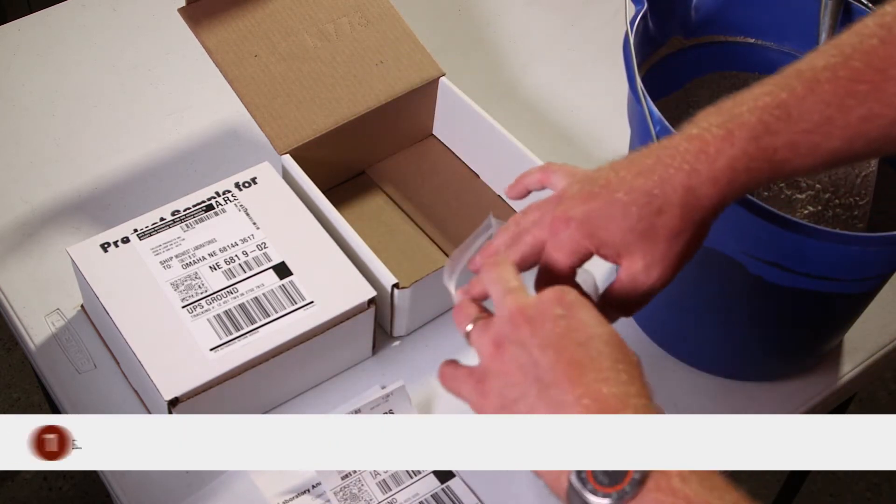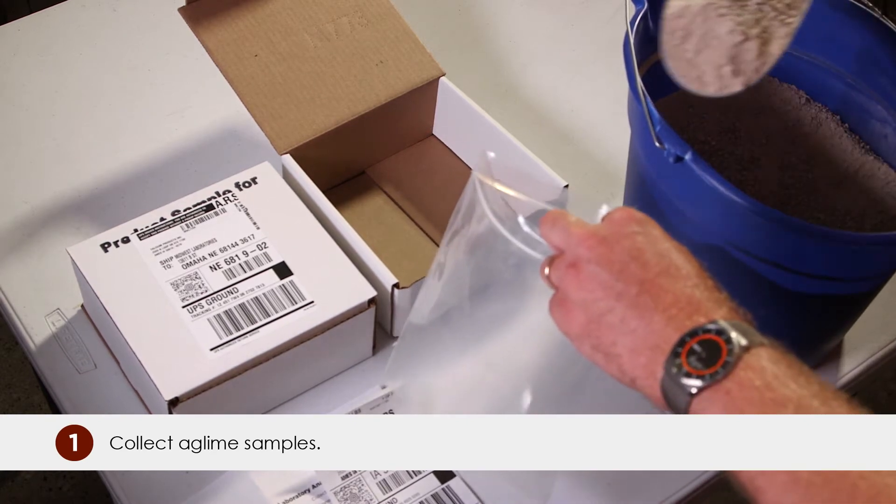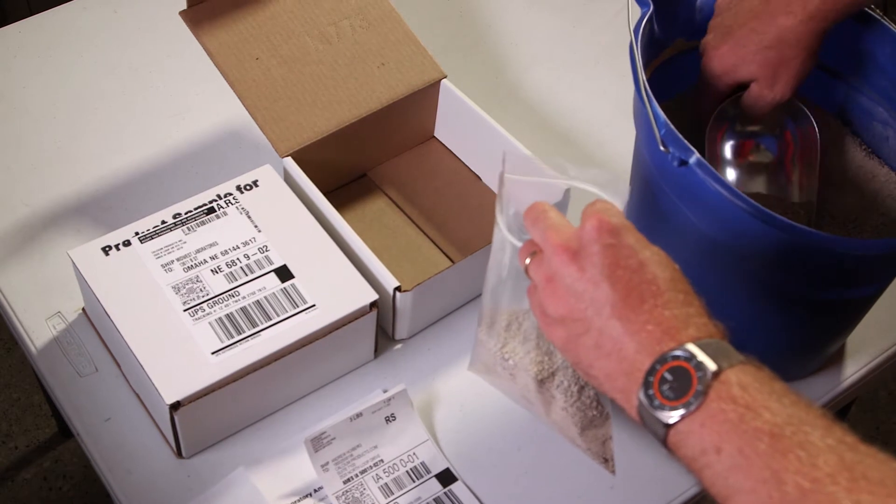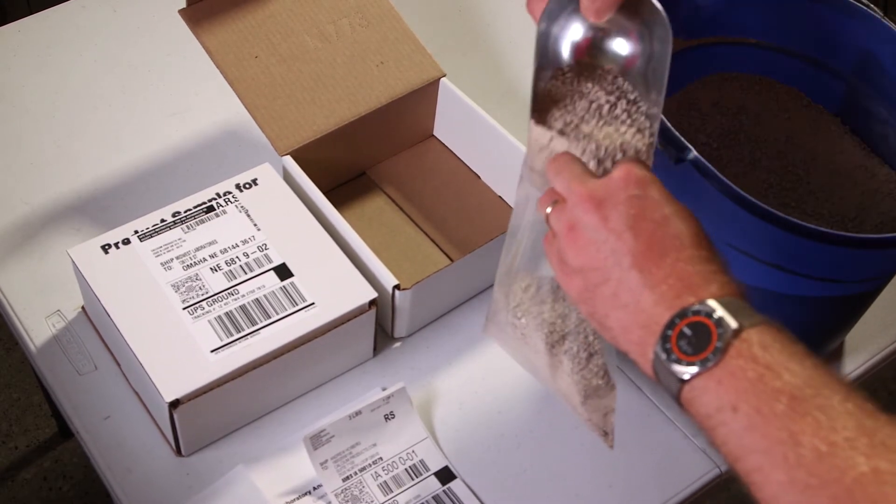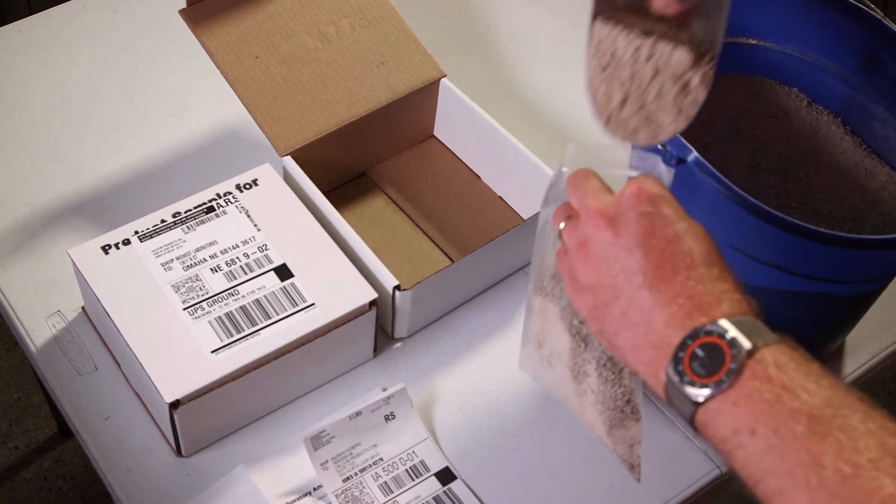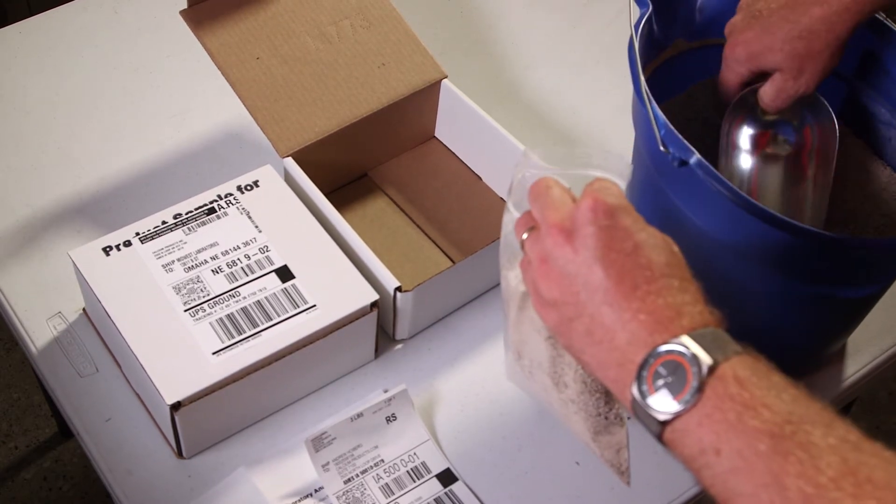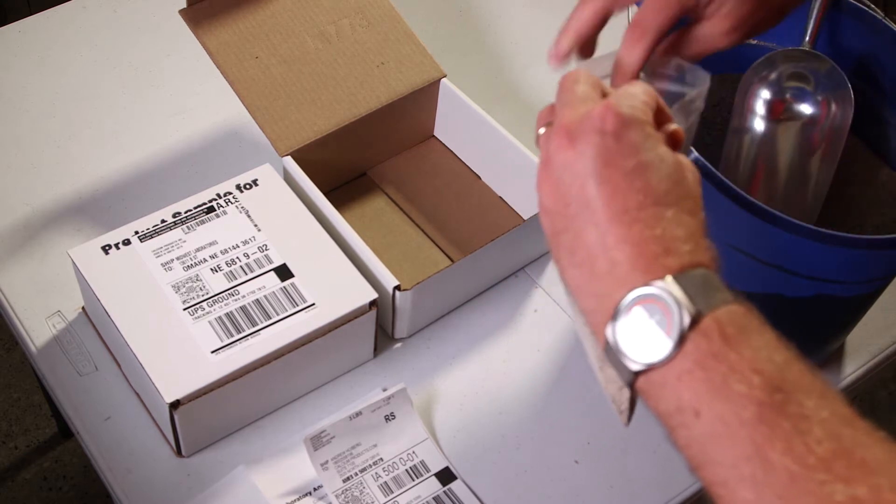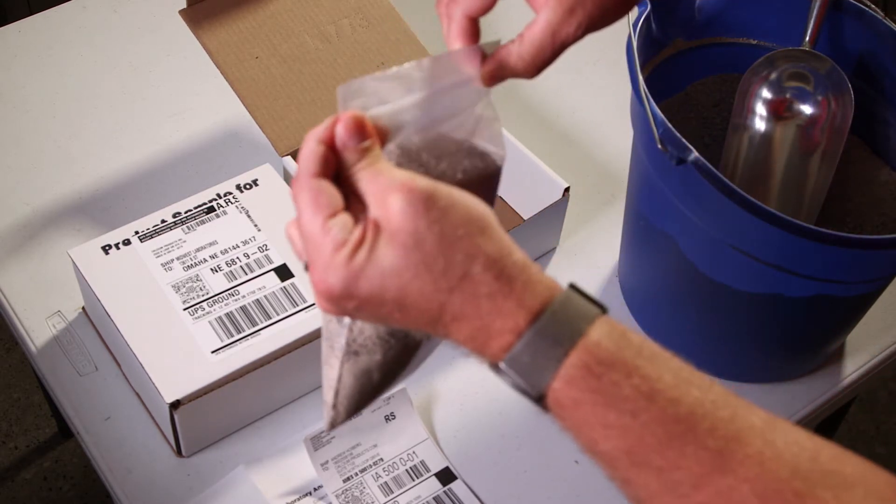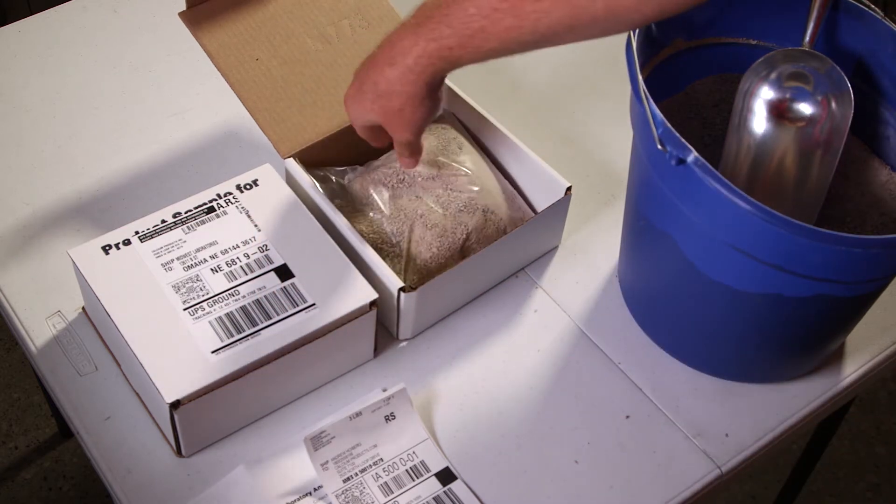The first step in this process will be to fill up the baggie in each one of the boxes as full as you can get them. We've got to make sure we have enough material to get the analysis done and the stacks built. Once the baggie is about as full as you can get it, simply seal it up and place it back in the box.